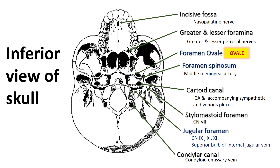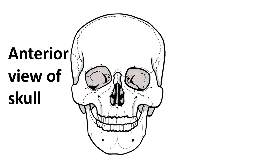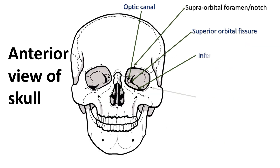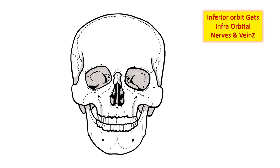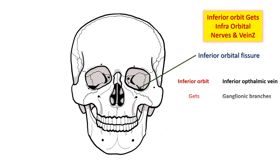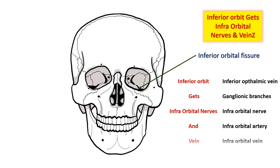Here is the inferior view of the skull showing some foramina and their contents — the purple ones are those previously discussed. Note the location of the foramen spinosum, as it is near the spine of the sphenoid. In the anterior view, use 'inferior orbit gets infraorbital nerves and veins' to remember the contents of the inferior orbital fissure: inferior ophthalmic vein, ganglionic branches from the pterygopalatine ganglion to the maxillary division of the trigeminal nerve, infraorbital nerve, artery and vein, and zygomatic branch of the maxillary division of the trigeminal nerve.